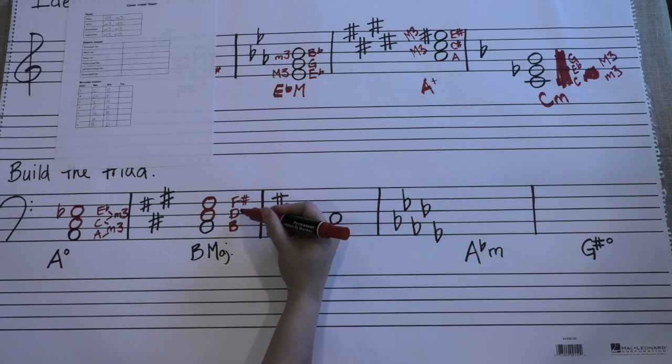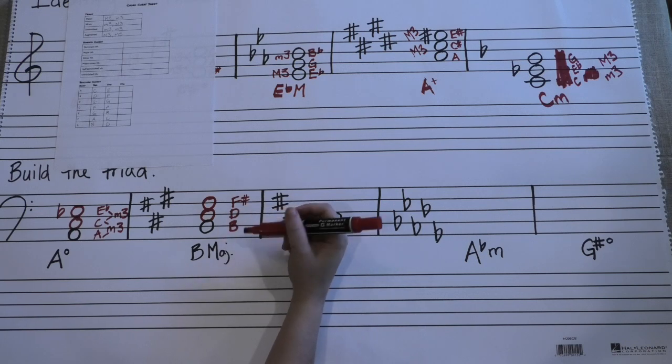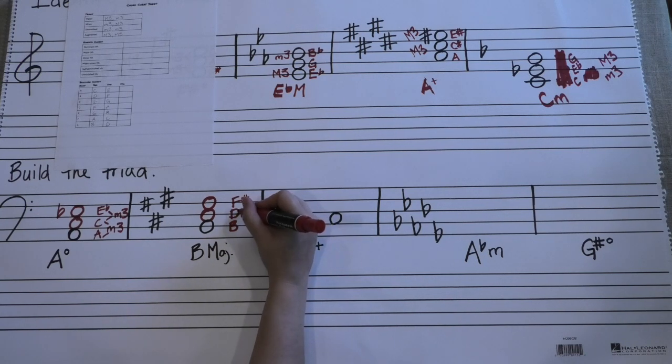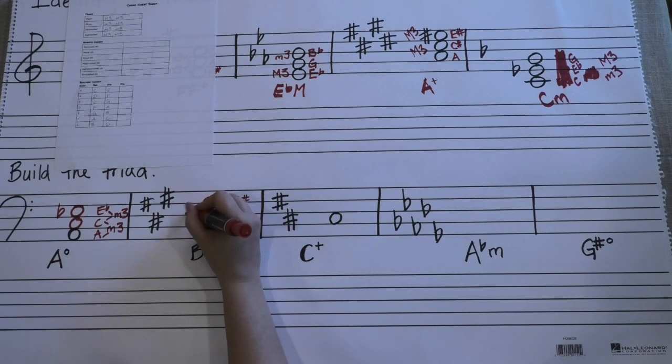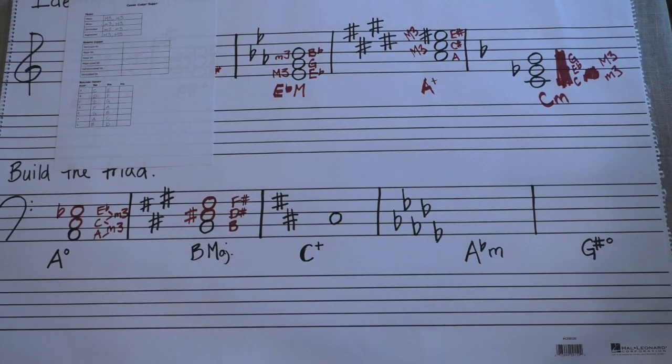We need the bottom interval to be a major third. In order for that to happen, we need this to be a D sharp. So there is your B major triad. Let's go on to the next one.